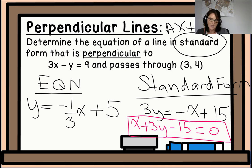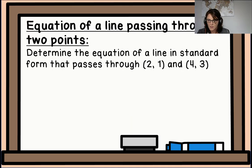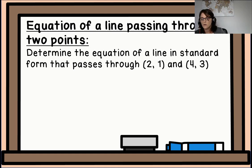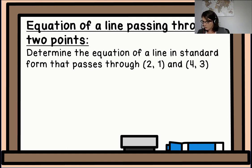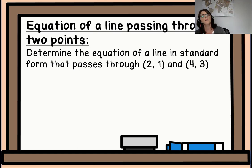Let's look at another example. Determine the equation of a line in standard form that passes through the coordinates (2, 1) and (4, 3). Just like before, we are going to find the slope, determine the y-intercept, and put it all together into an equation. Across your paper you should have slope, y-intercept, and equation as headers.